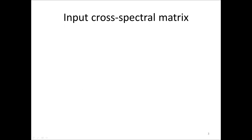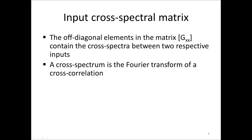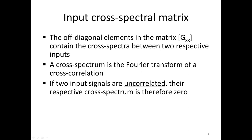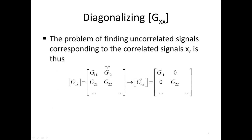Consider the input cross-spectrum matrix GXX. The off-diagonal elements in GXX contain the cross-spectra between two respective inputs. A cross-spectrum is the Fourier transform of a cross-correlation function. If two input signals are uncorrelated, their respective cross-spectrum is zero. Thus, if we could diagonalize GXX somehow, we would have an input cross-spectral matrix of uncorrelated signals. How can we achieve that?